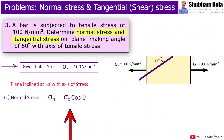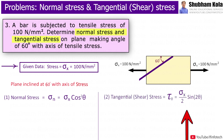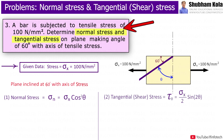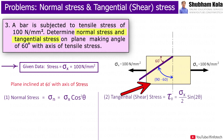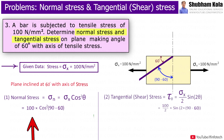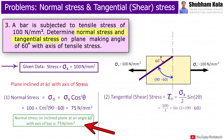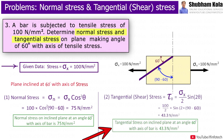The formula for normal stress is σx·cos²θ, and shear stress is (σx/2)·sin2θ, where θ is the angle with the vertical axis. But in the problem the angle is with the horizontal axis, therefore θ = 90°−60°. Putting the value of σx, the normal stress on the inclined plane is 75 N/mm², which is tensile in nature, and the tangential stress on the inclined plane is 43.3 N/mm².